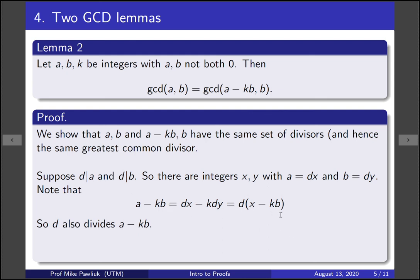So it's d times something. So then we've written a minus kb is d times an integer. So we've shown that d is a divisor of a minus kb. So that's what we set out to do. We showed that if d divided both of these, then it divides both of these. We already know that d divides b, so we don't need to check anything.